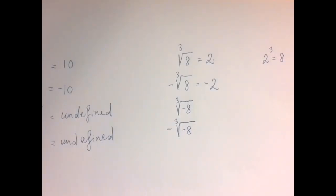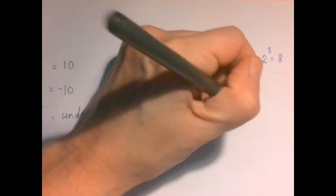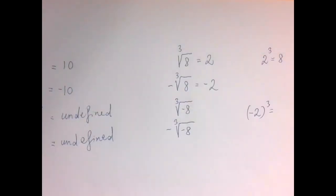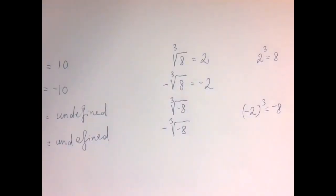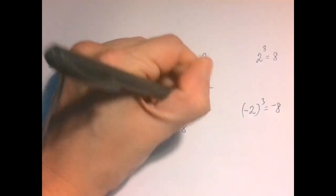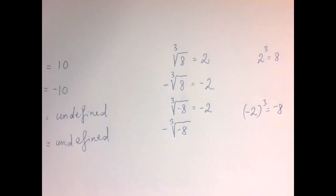The next expression is third root of negative 8. While square roots of negative numbers don't exist, third roots of negative numbers exist easily, because negative 2 to the third power is negative 8. So there is a third root of negative 8, and it is negative 2.